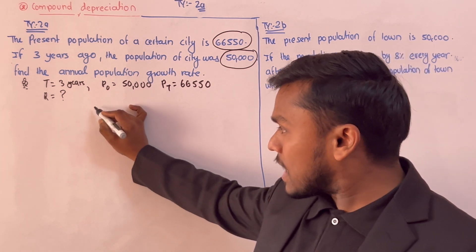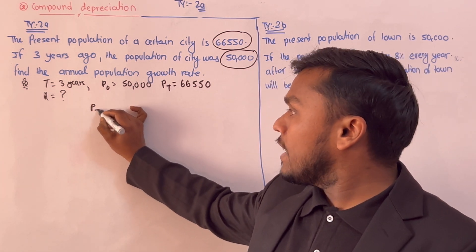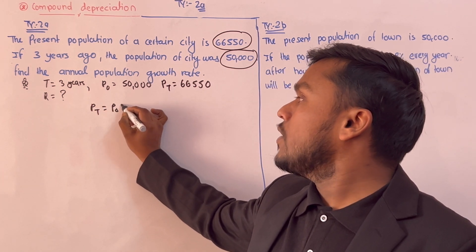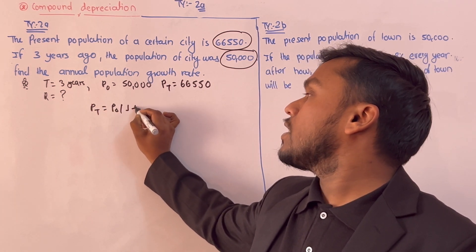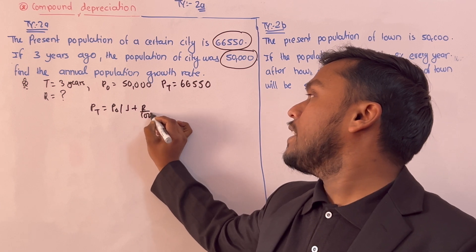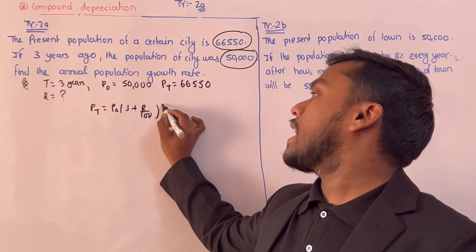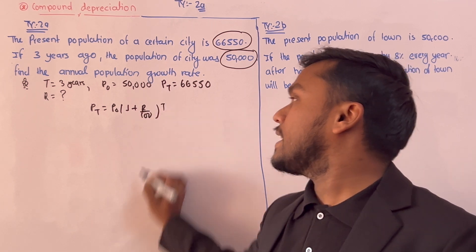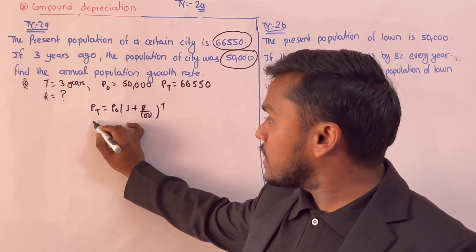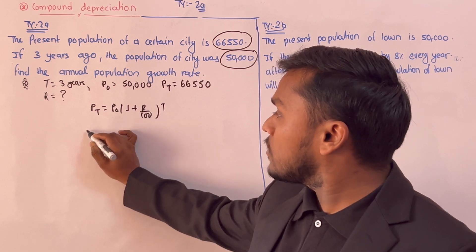Let's apply another formula and work through it. Pt equals P0 times (1 plus r upon 100) to the power t.